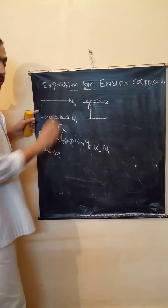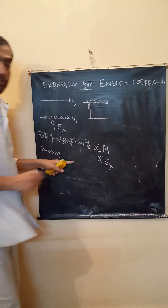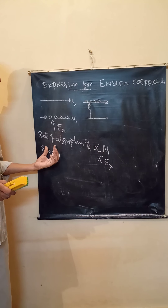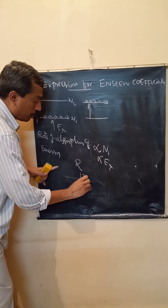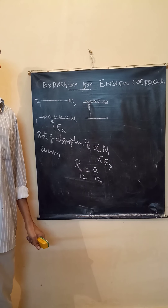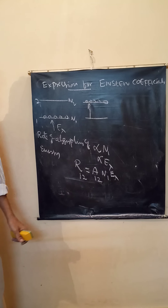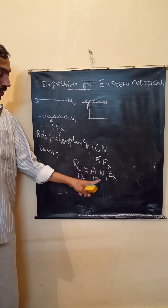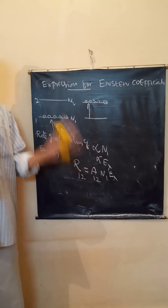The first process in laser is induced absorption. We have atoms in the ground state. We supply energy through optical pumping to excite them to the higher level. The rate of absorption — or probability of induced absorption — is proportional to N₁ (number of atoms in the ground state) and ρ(λ) the energy density being supplied. Removing the proportionality sign, we introduce a constant B₁₂ known as the Einstein coefficient of induced absorption, giving R₁₂ = B₁₂ · N₁ · ρ(λ).